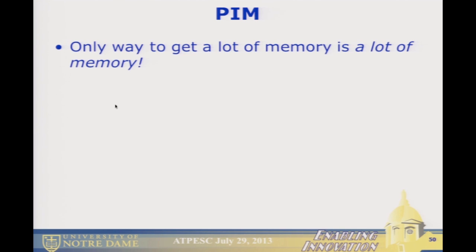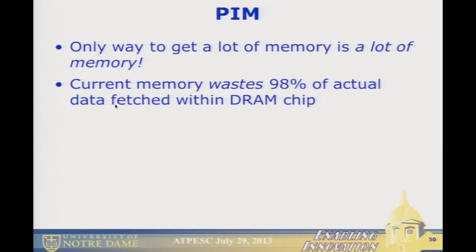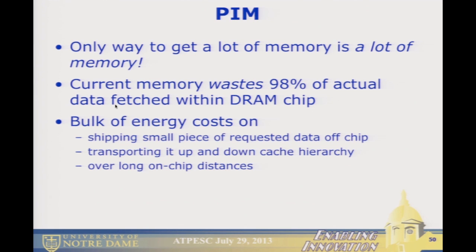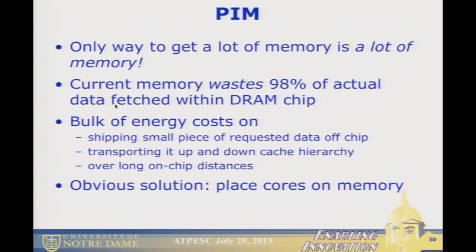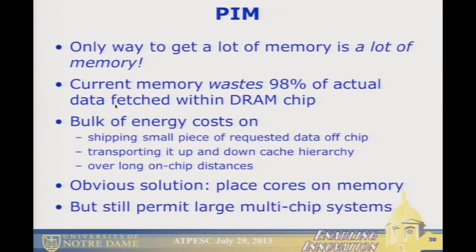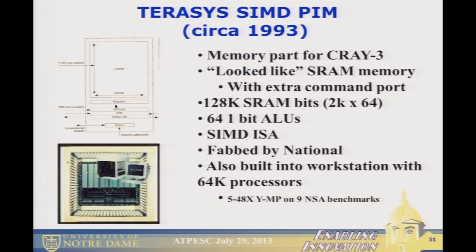The reason for PIM: if you want a lot of memory, there's only one way — you have to have a lot of memory chips. Current memory chips waste about 98% of the data they actually fetch versus what they deliver off-chip; that's the business of row length versus interface width. The bulk of the energy ends up in transporting data off-chip and throwing away bandwidth you didn't need. An obvious solution is to place cores on memory. One of the first such parts: Seymour actually built one for the Cray 3 — never finished — an SRAM memory part with 64 one-bit ALUs at the bottom of the rows and a communication path to send commands to the memory.